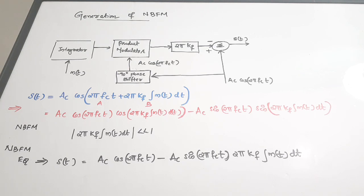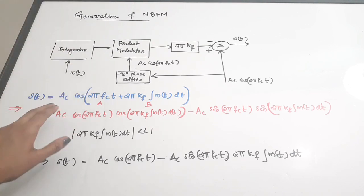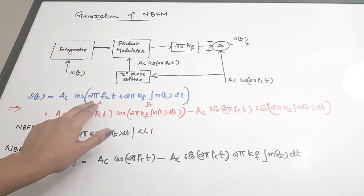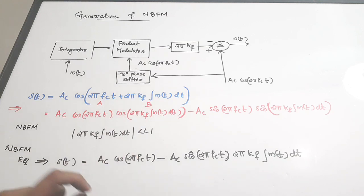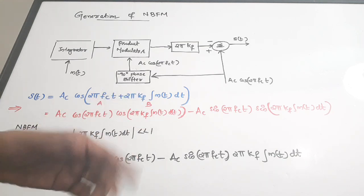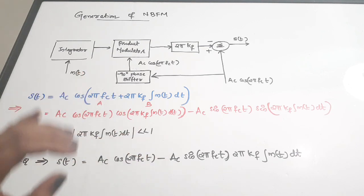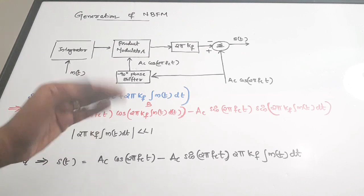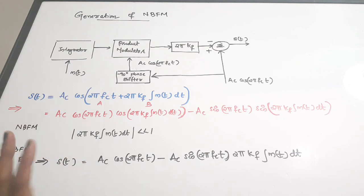First let us see the generation of a narrow band FM. Before seeing the block diagram, we are going to see how the wave equation looks. For the general FM case, the equation is: ac cos(2π fc t + 2π kf ∫m(t)dt), where m(t) is the modulating signal, kf is the frequency sensitivity, fc is the frequency of the carrier wave, and ac is the amplitude of the carrier wave. The amplitude is the same as the original carrier — only the frequency part changes.